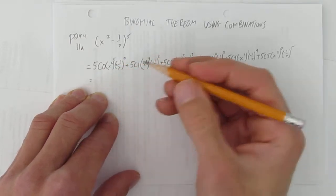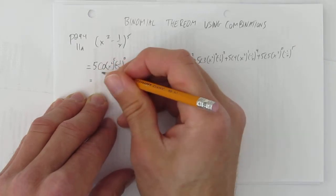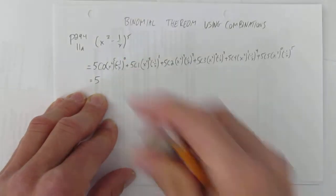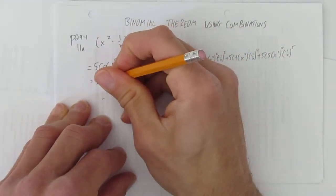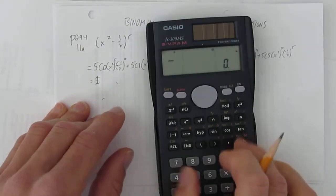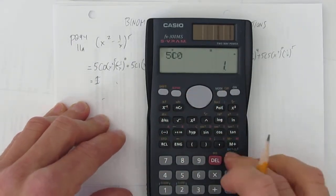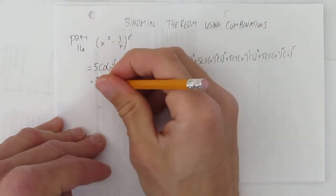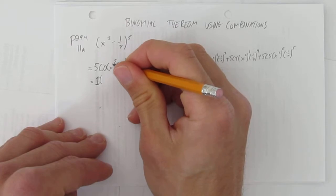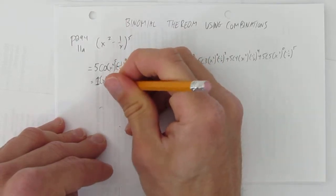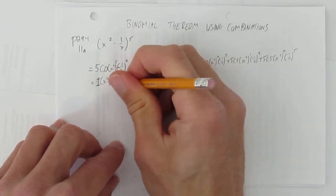And now we just evaluate. You can use your calculator, but hopefully you'll know eventually — 5 choose 0 is just... whoa, that's incorrect. 5 choose 0 is just 1. We can check on our calculator to be sure because I almost made a mistake there. That's 5 choose 0: 1. So 5 choose 0 is 1 times x squared to the power of 5. When you have an exponent on an exponent, you multiply those exponents. And when you have an exponent of 0, anything to the power of 0 is just 1.